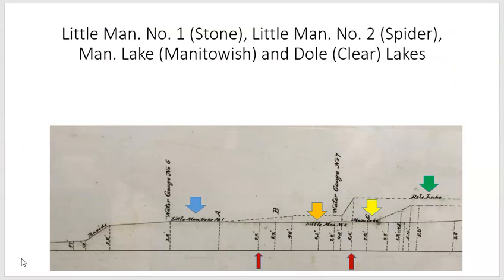Little Man No. 1, Stone Lake, is marked in blue. Little Man No. 2 Lake is Spider Lake, marked in orange, showing basically flat water between those two points. It remains flat going to Manitowish Lake. If you look at Dole Lake — actually Clear Lake — there's a great rise: a three-foot rise from Stone Lake to Clear Lake, suggesting with the red arrows that there was a strong current between Clear and Stone Lake.